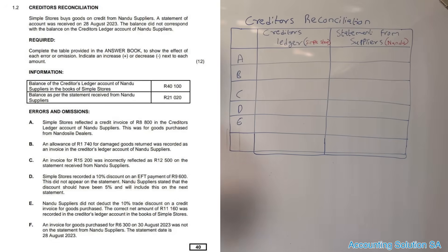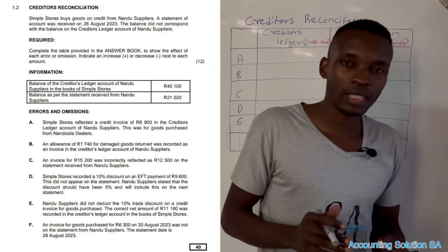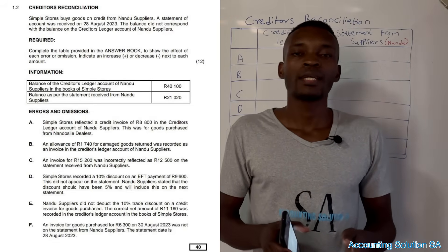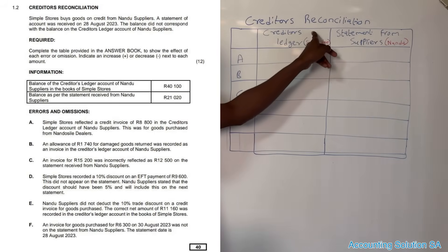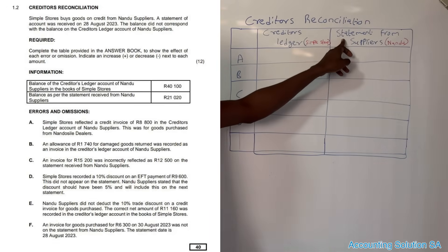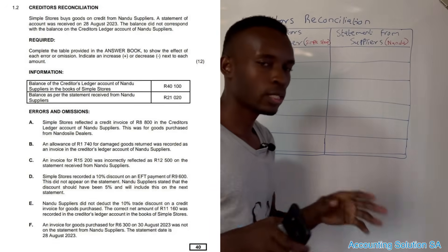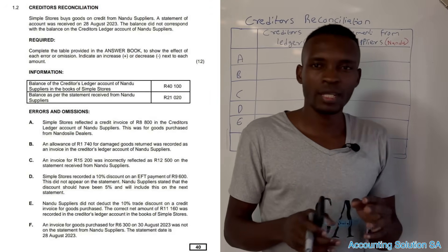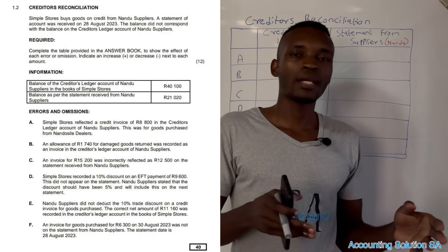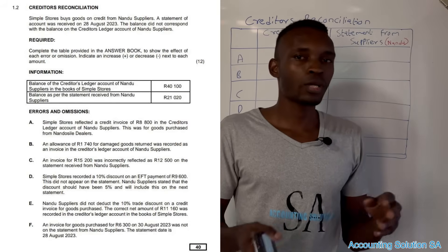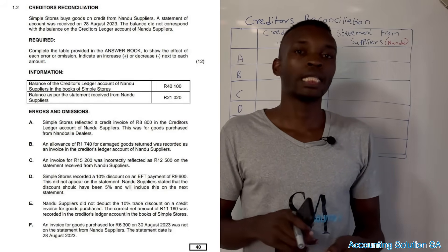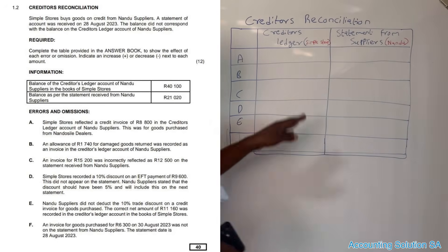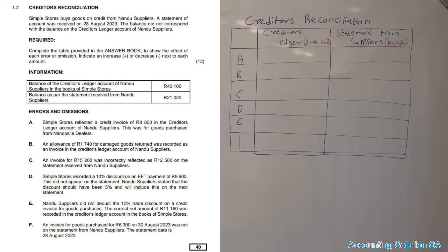When we talk about a creditors reconciliation statement, we are correcting mistakes that are done by either us as a business — which we call the creditors ledger, our books — or by our supplier. When we purchase from our supplier, a lot of things happen. For example, we can buy something on credit; they have to record it and we also have to record it. Mistakes can happen that cause a difference, but after all the balances must be the same — it must balance.